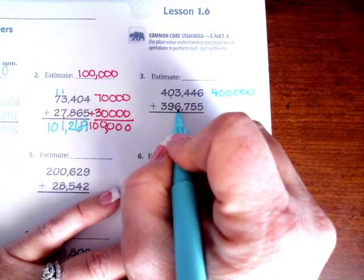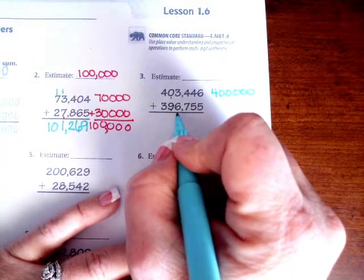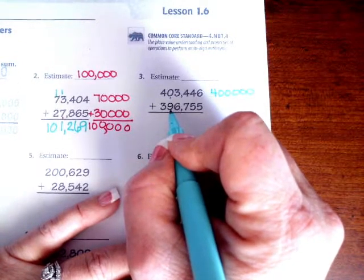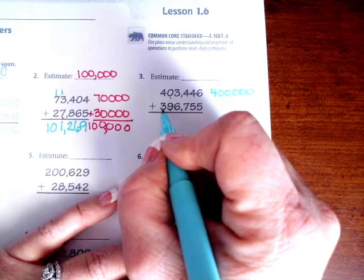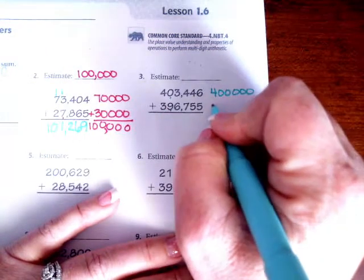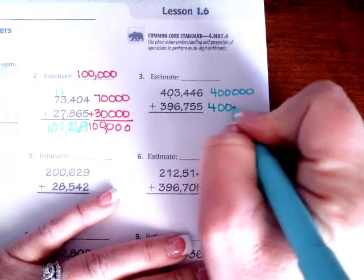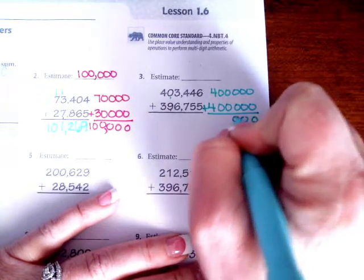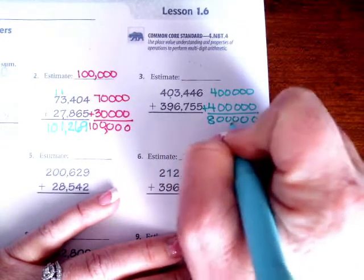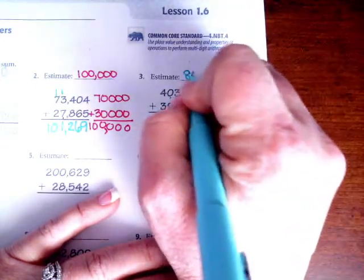Now we're going to look at the six. The six is definitely bigger than five, so that nine's got to go up, but we can't just put a 10 there, which means we have to carry one over to the three. So this one's actually going to round to 400,000 as well, which means after all the zeros, we have an 800,000 estimate.